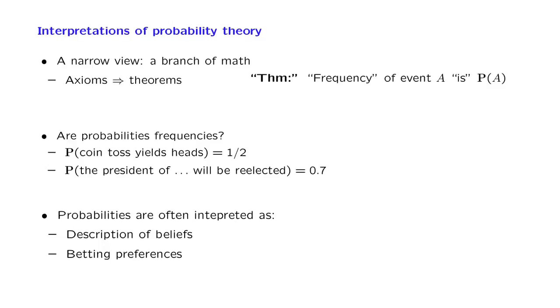But now, if we think of probabilities as beliefs, you can run into the argument that, well, beliefs are subjective. Isn't probability theory supposed to be an objective part of math and science? Is probability theory just an exercise in subjectivity?